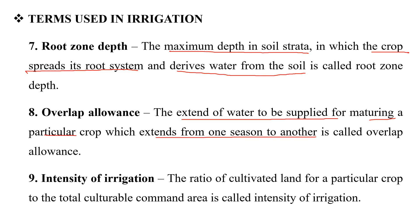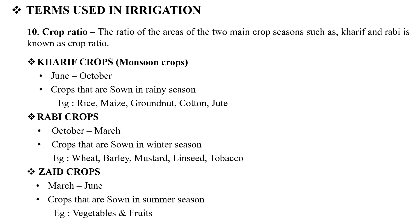The next term is intensity of irrigation. Intensity of irrigation means the ratio of cultivated land for a particular crop to the total cultural commanded area. The next term is crop ratio. Crop ratio is the ratio of areas of the two main crop seasons, such as kharif and rabi, known as crop ratio.